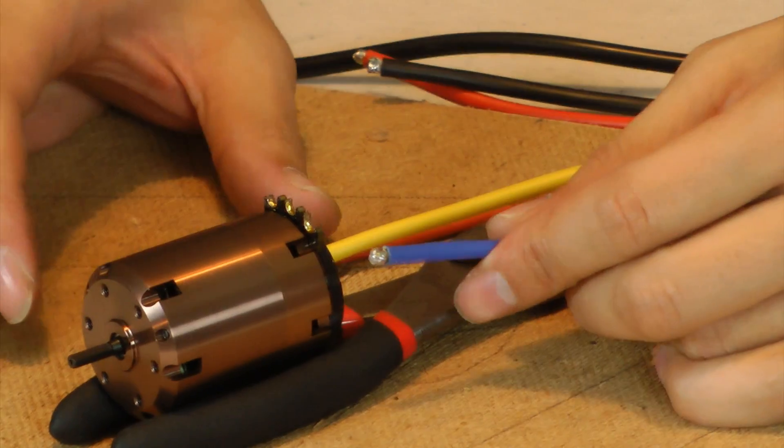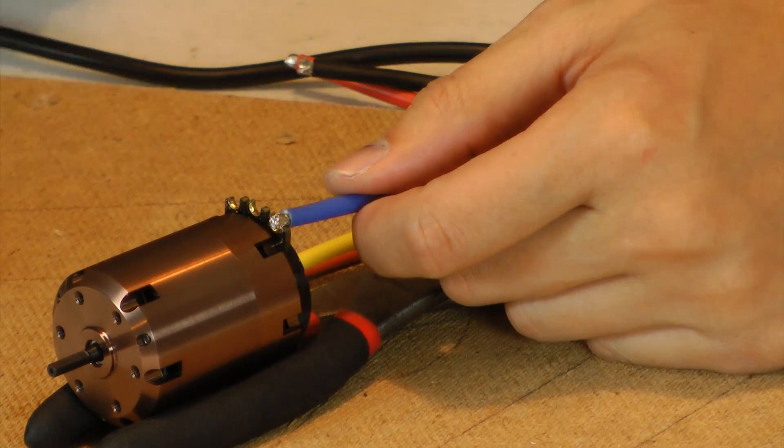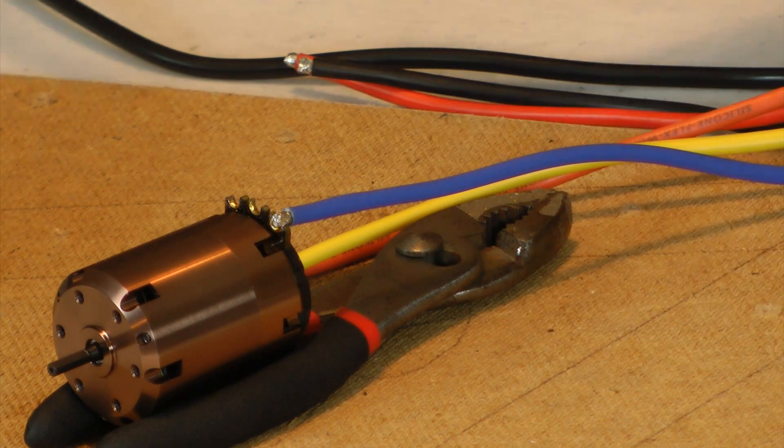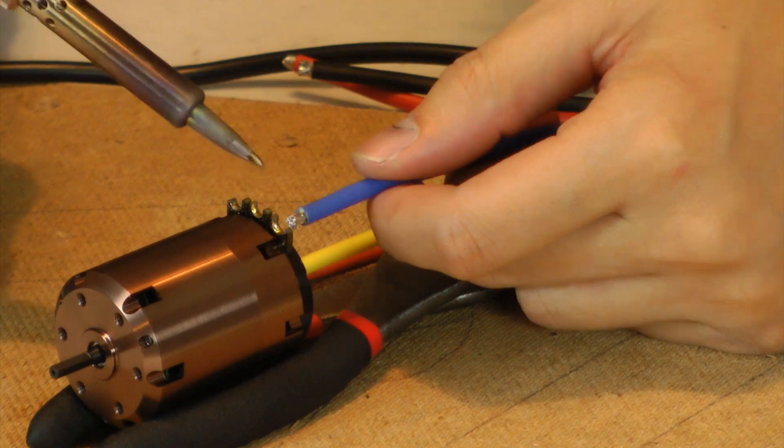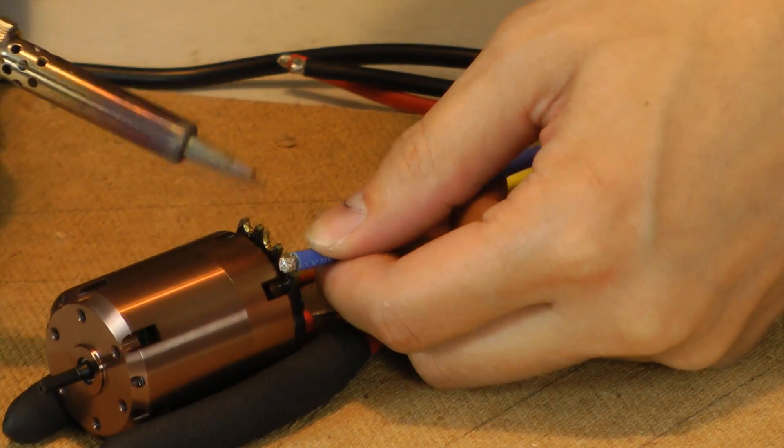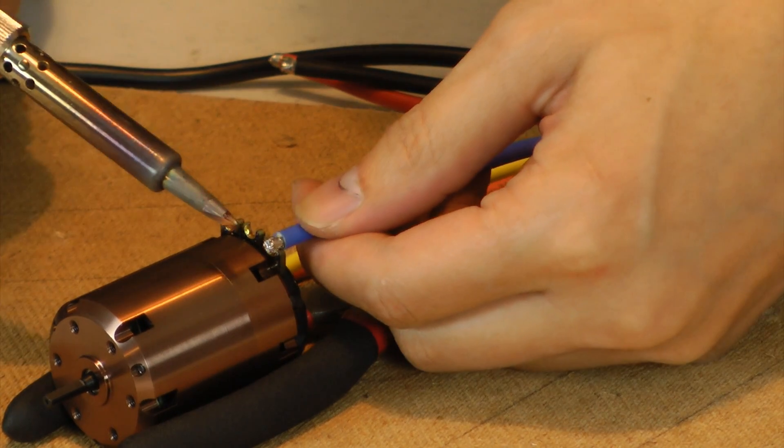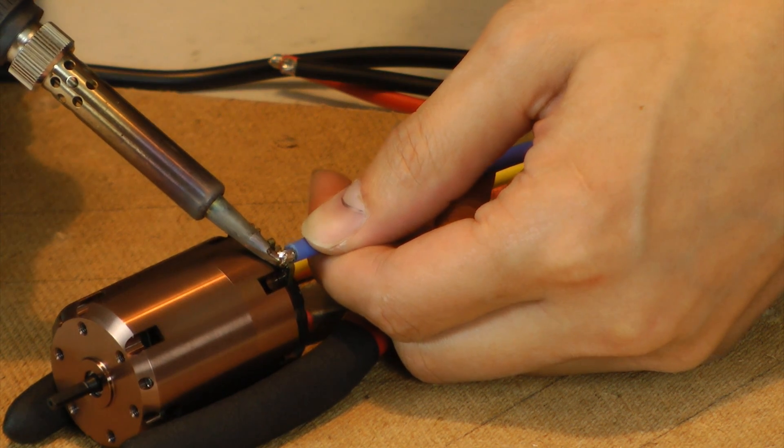So now that both things are tinned here, this should be a much easier process. I'm just applying a little bit of pressure on the cable into the slot there, and then applying the heat to both surfaces.